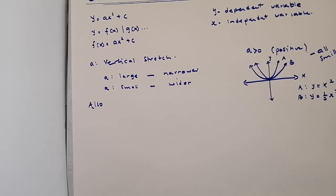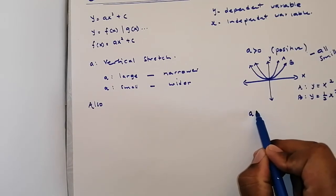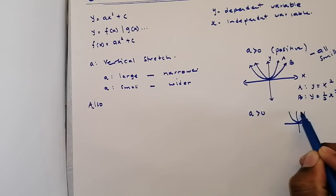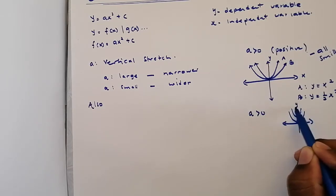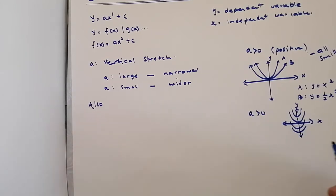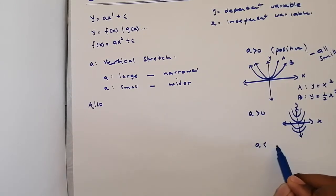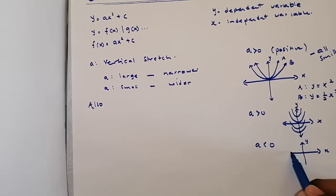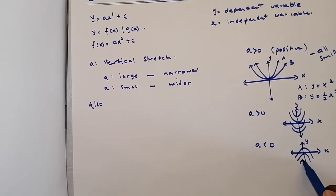I want us to note that if a is positive, the parabolic graph will open upward — this is y, this is x. If a is positive, the graph takes this upward-opening form.